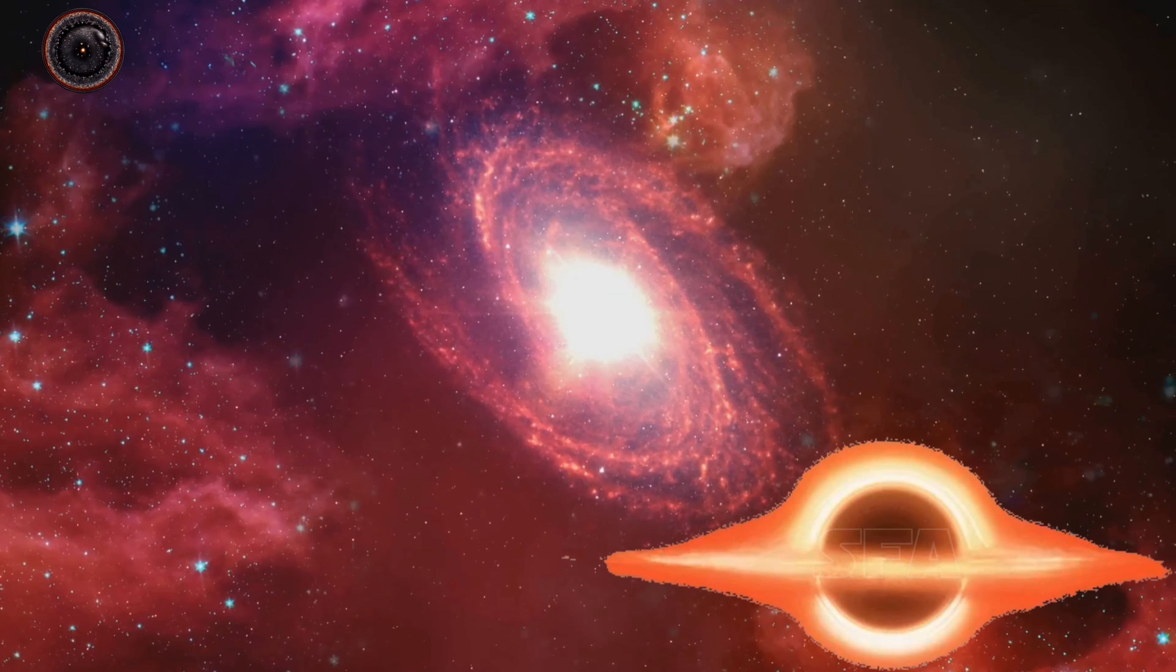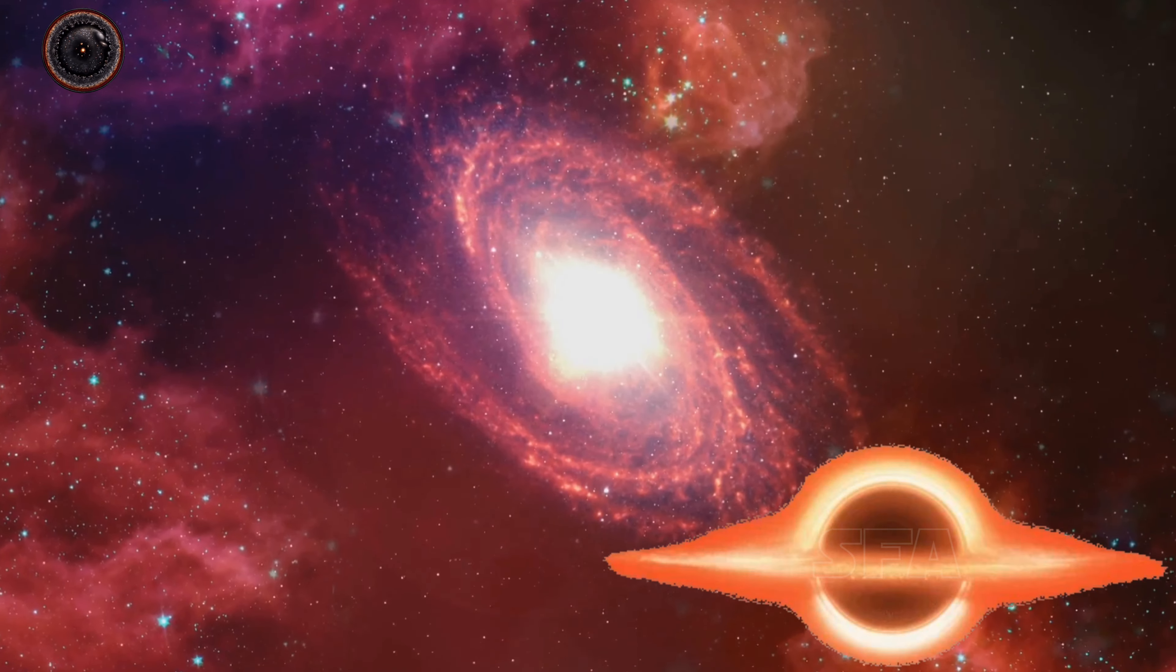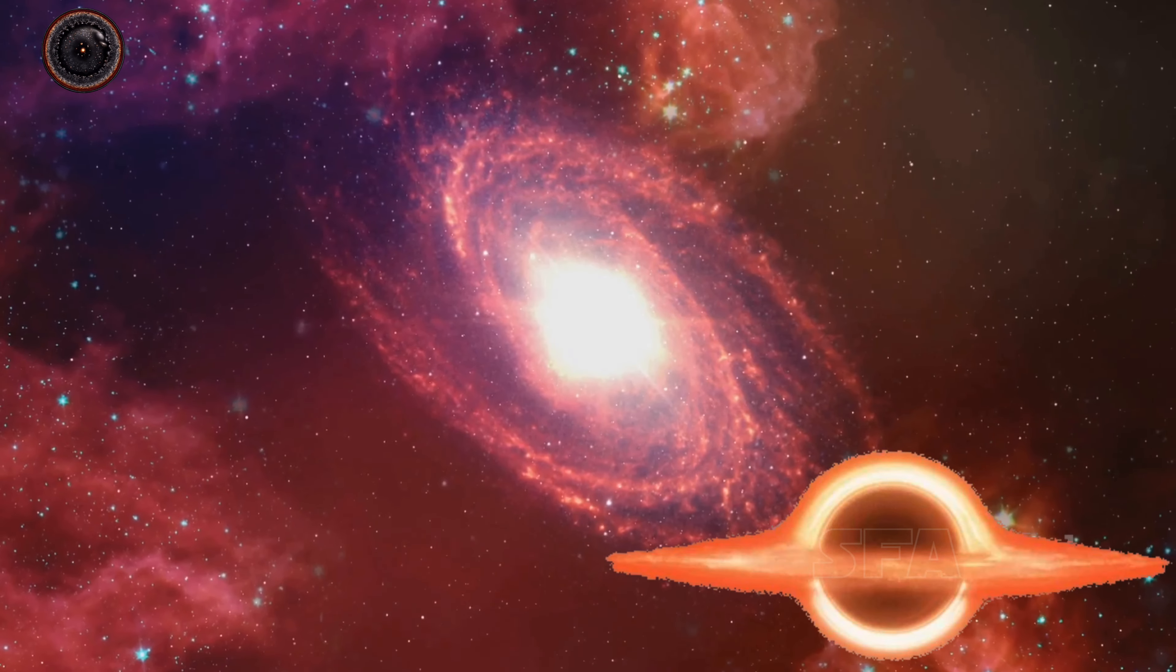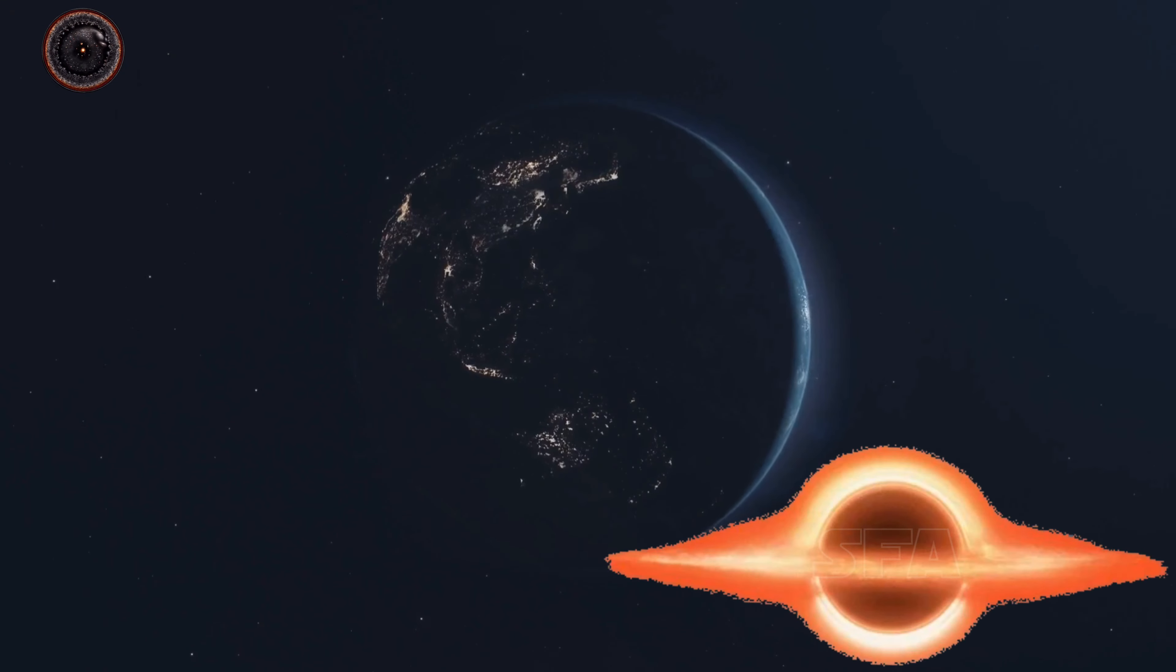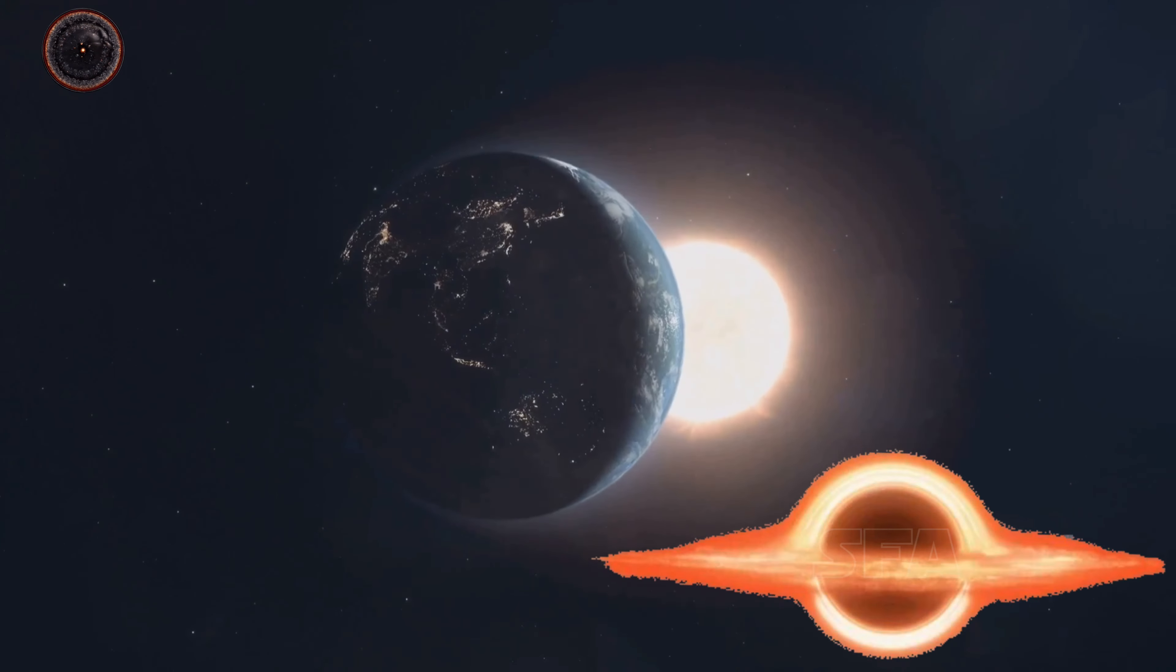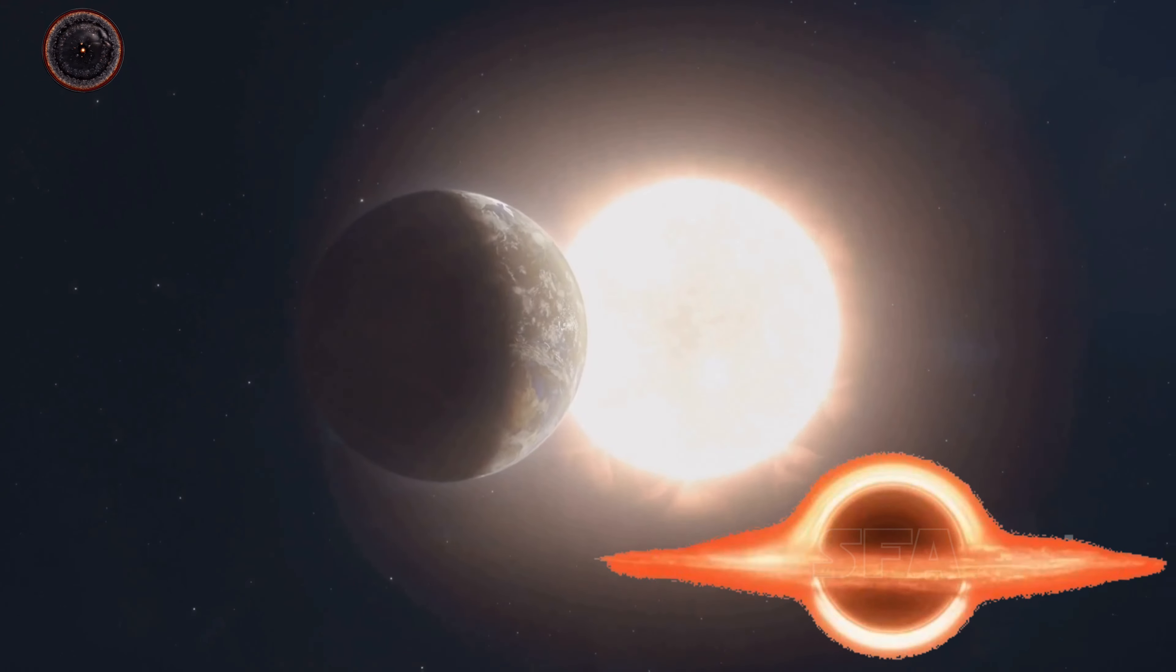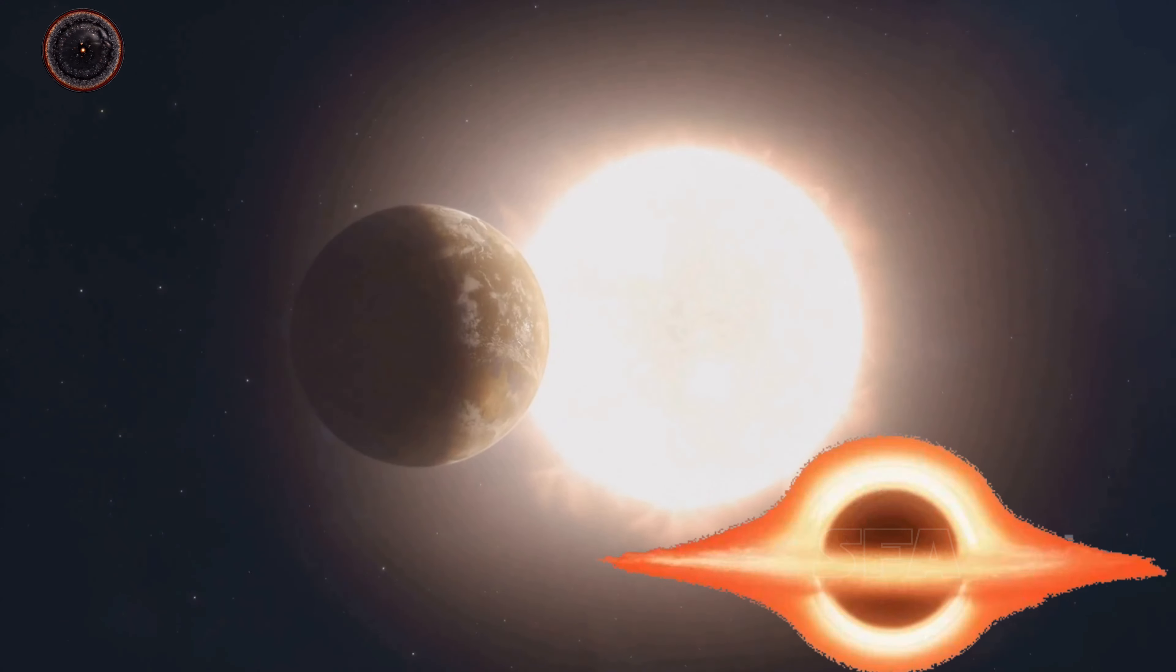That's right, our universe has been around for billions of years, expanding and evolving, all the while producing the redshifted light that we observe today. This redshift is like the universe's own time capsule, providing us with a glimpse into its expansive past and helping us understand its present. The redshift thus is a testament to our universe's vast and expanding history.